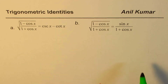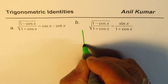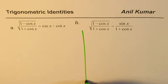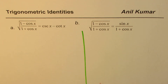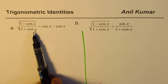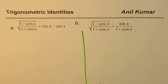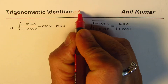We need to prove these identities. How will you begin proving them? That is what we should talk about first. Whenever you see 1 minus cos x or 1 plus cos x, the idea is to rationalize. So the strategy here is to rationalize.